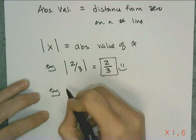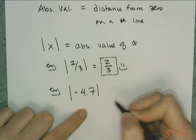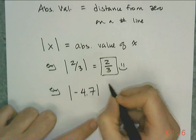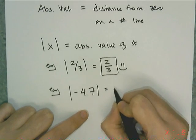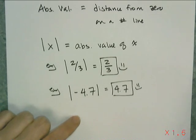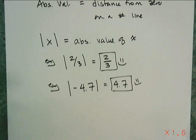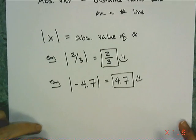If I put some negative number in there, I'm asking you to find the distance that negative 4.7 is away from zero, and it's 4.7 units. Now a lot of people think that absolute value means to make it positive, and what it really means is just take the sign away, because distance doesn't have a sign.